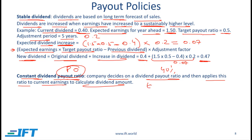If earnings are high then the dividend payout will also be high. If earnings are low then the dividend payout will be low. So with this method the volatility of dividends will be high.